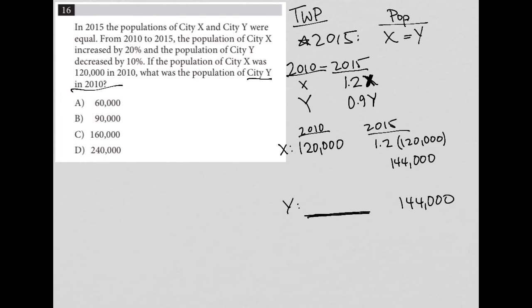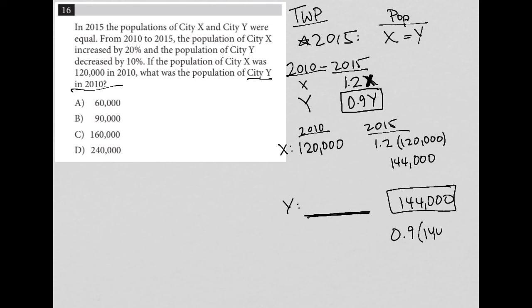We want to figure out what the population of Y was in 2010. I know that in 2015 we are at 90% of the population in 2010 for city Y. So if I know that the 2015 population was 144,000, I can solve: 144,000 divided by 0.9. Throwing that into my calculator, I get 160,000. So the answer must be choice C.